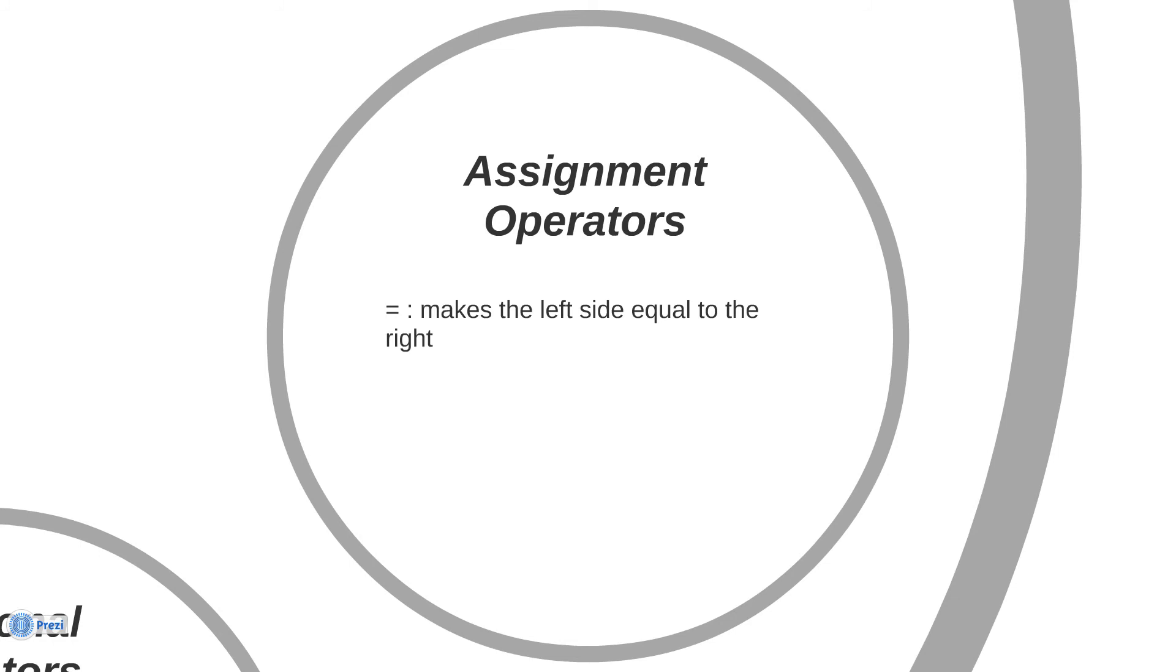So the equal sign just makes A equals B, it makes A and puts B the value. So 1 equals 2, it makes 1 into 2. So now the 1 is now 2. That's basically what the equal sign is.